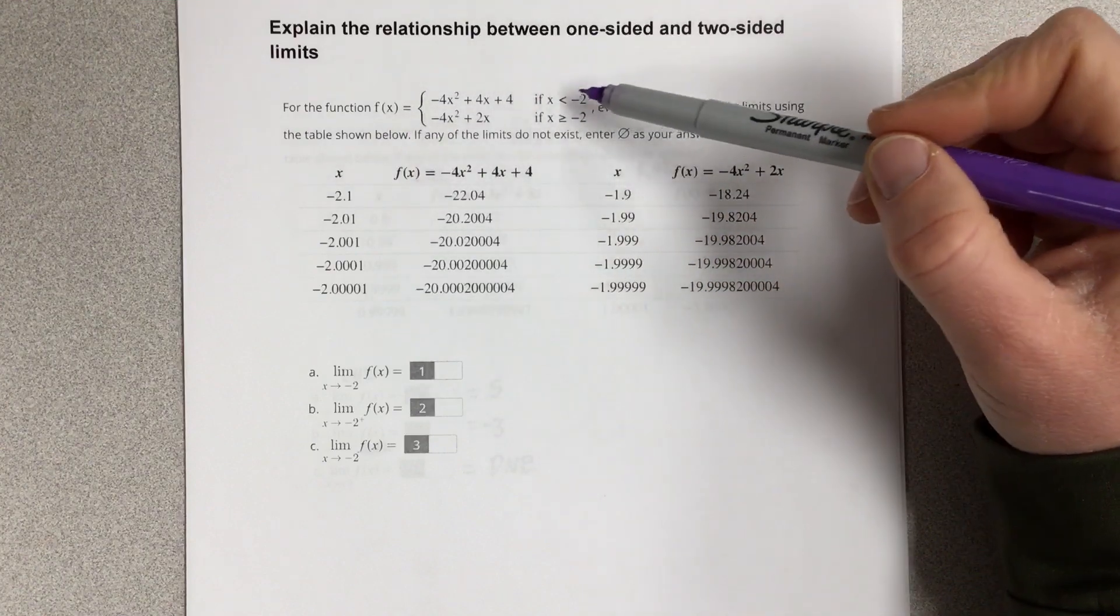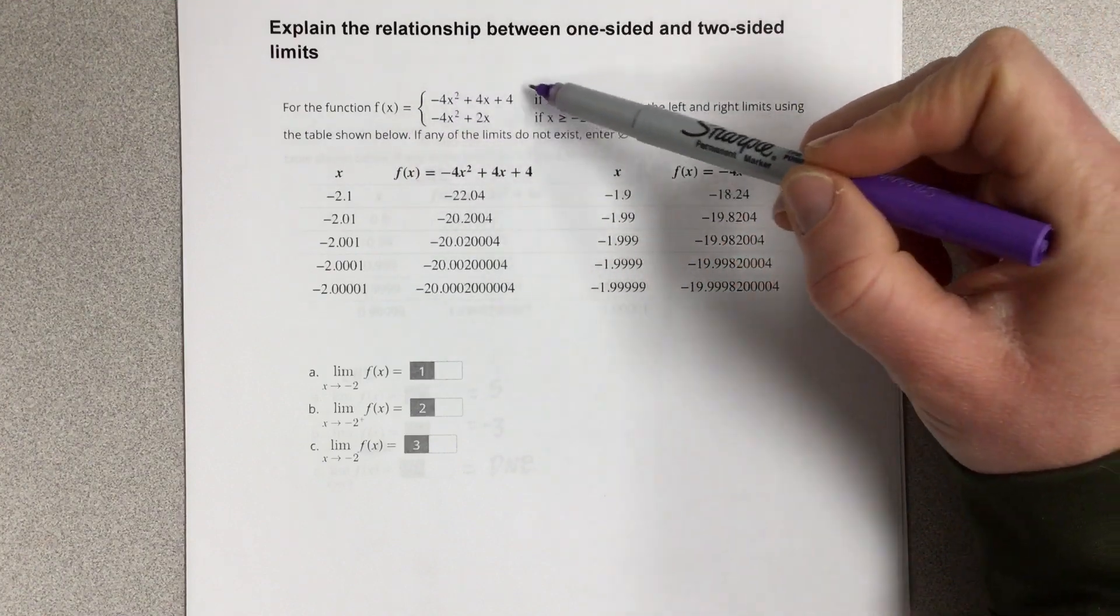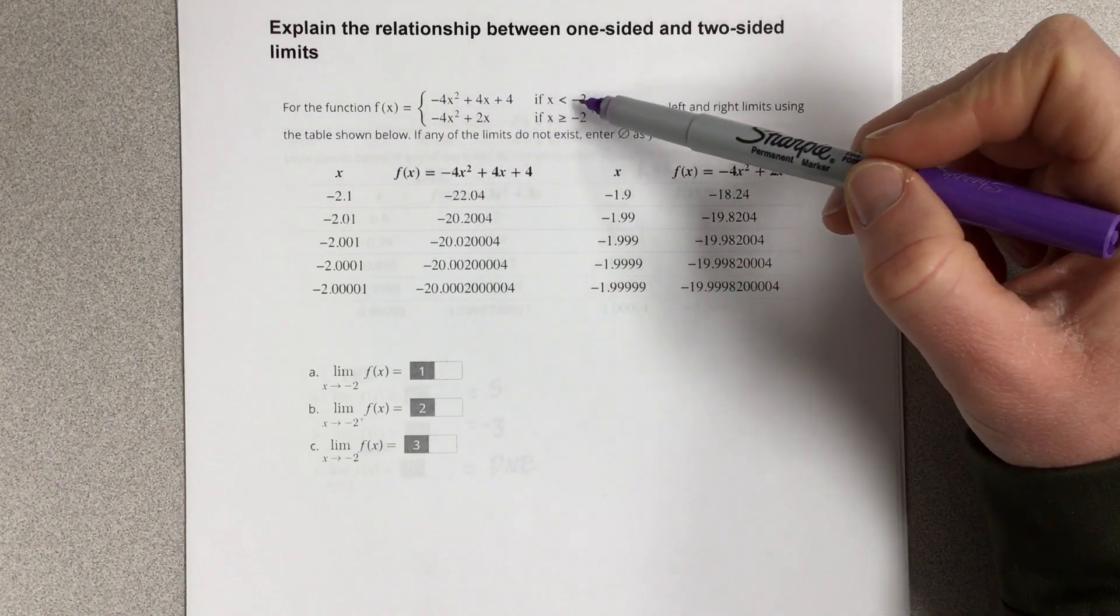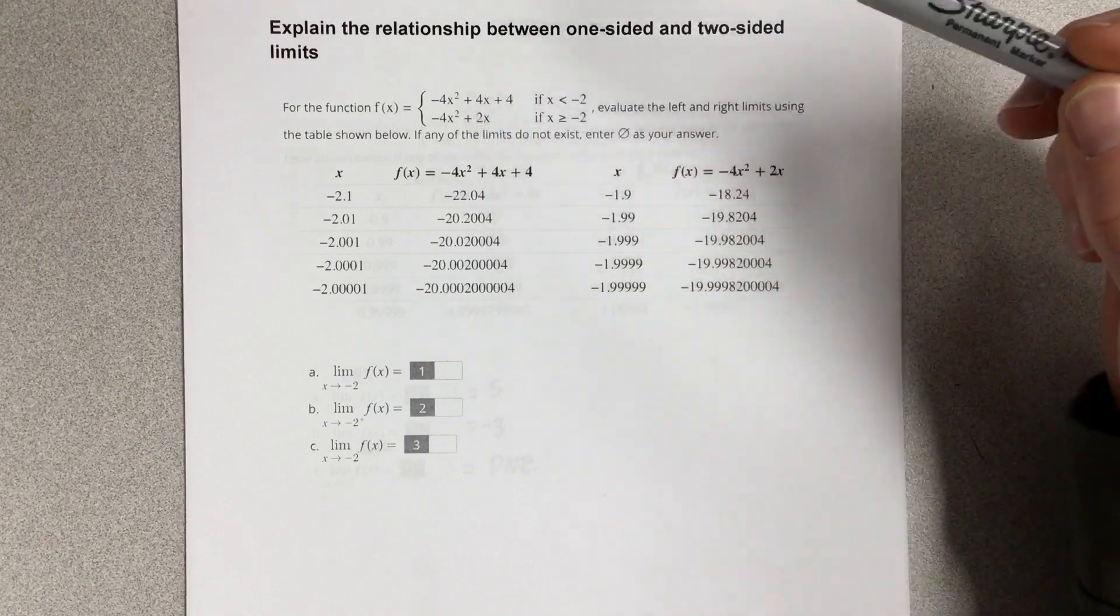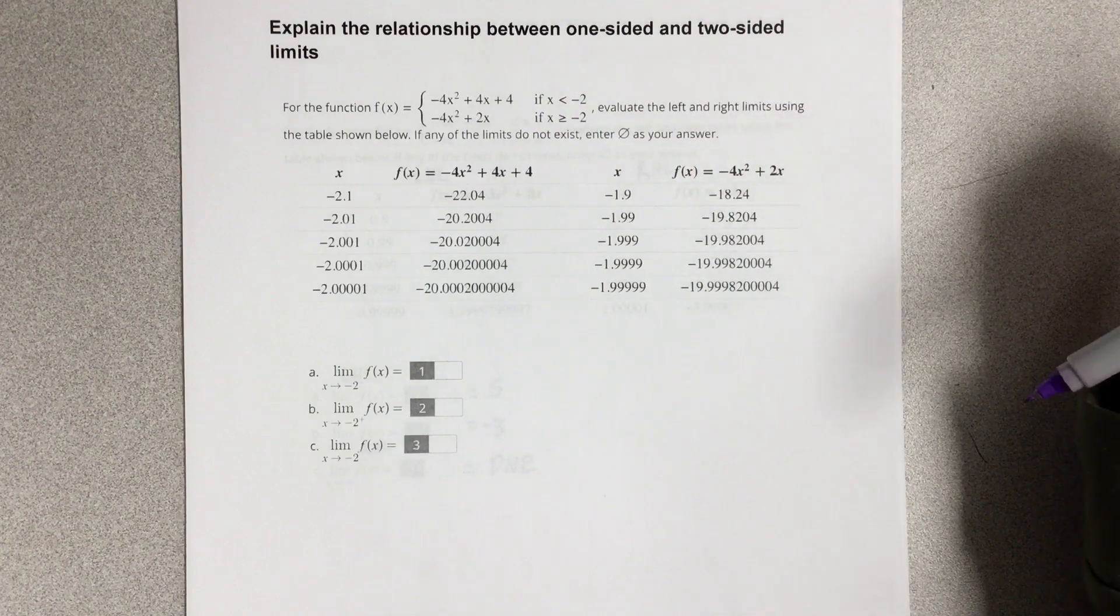It says, for the function f of x, which they give us a piecewise function here, where x is less than negative 2 for the top function, and x is greater than or equal to negative 2 for the bottom function, evaluate the left and right-hand limits using the table below.